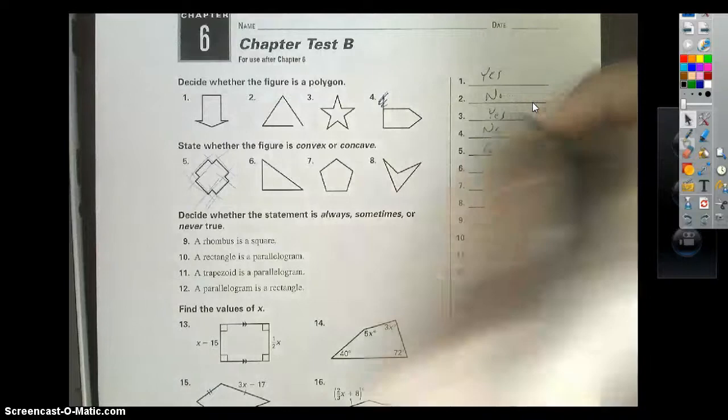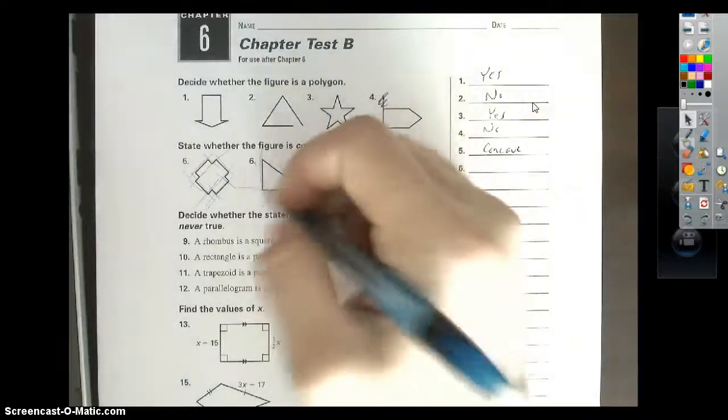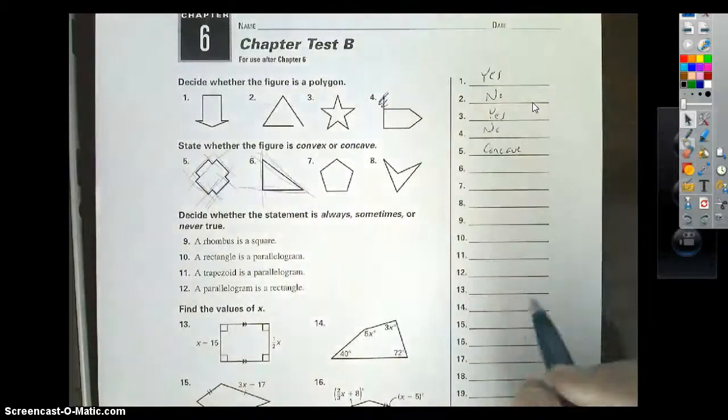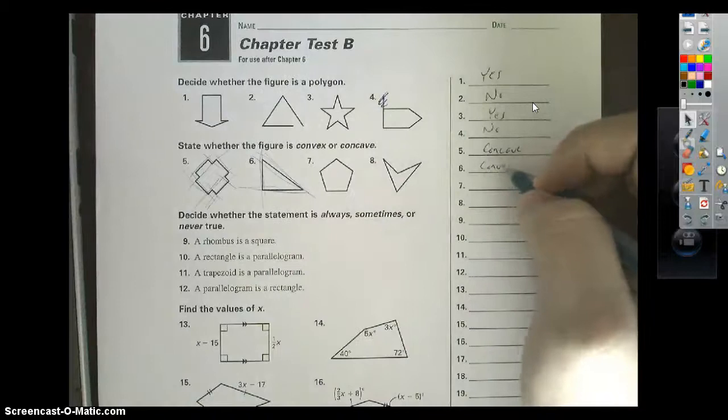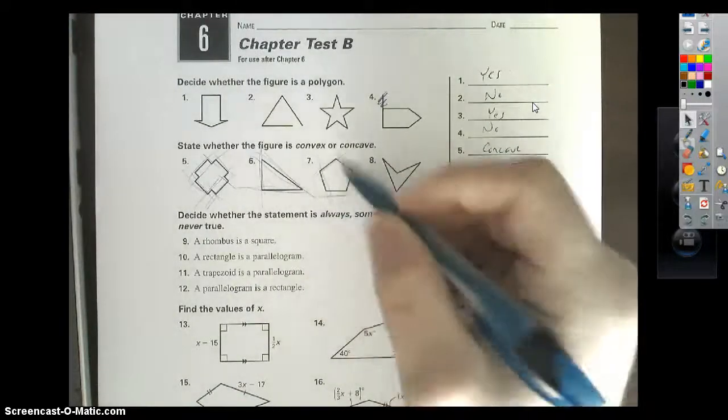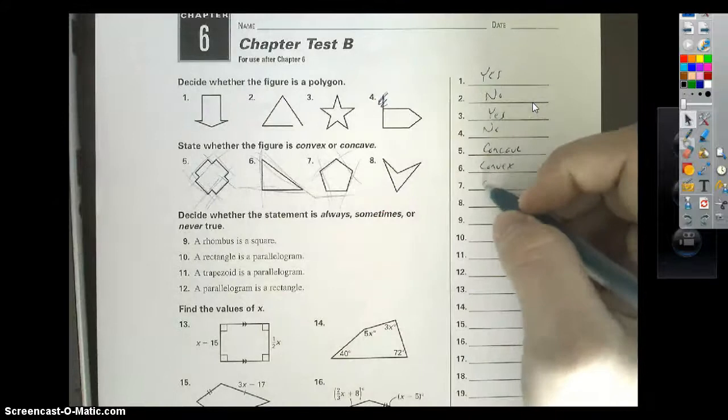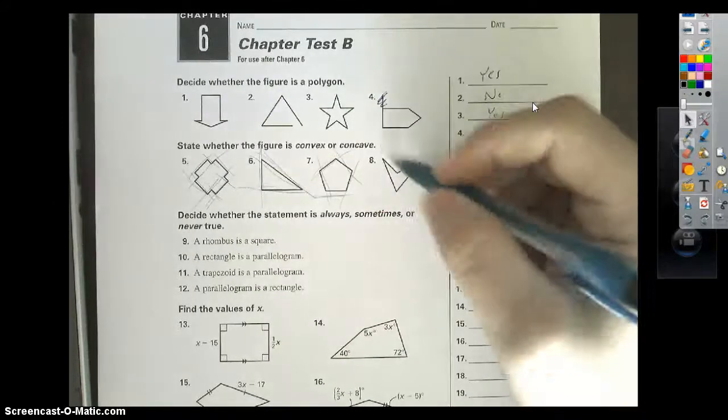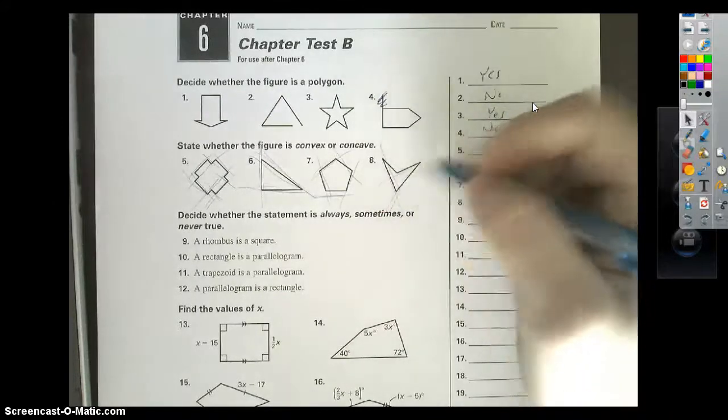So number 5 is concave, but if you look at number 6, if I extend all these sides out, none of them are going inward. That's what we call a convex polygon. Number 7, following those parameters, convex.